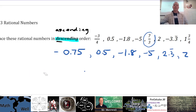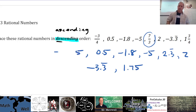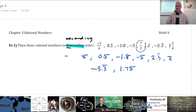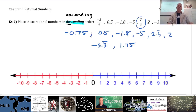We have a positive 2 there, a negative 3.3 repeating, and 1 and 3 quarters, which is 1.75. So now from greatest to least — descending order — what's the largest number on this list? 2.3 repeating? Okay, so 2.3 repeating is first.